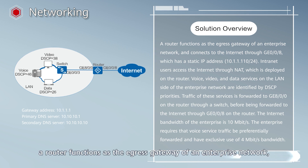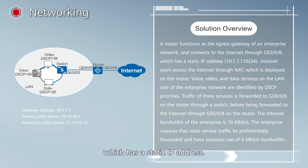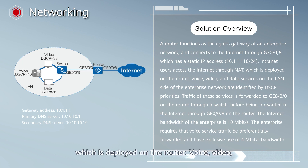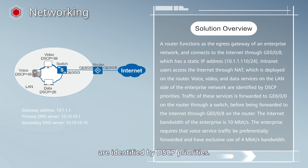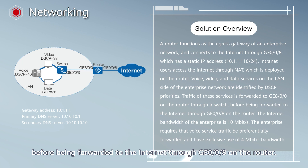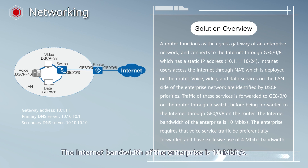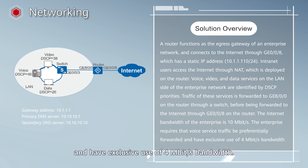In this networking diagram, a router functions as the egress gateway of an enterprise network and connects to the Internet through the interface GE0/0/8, which has a static IP address. Intranet users access the Internet through NAT deployed on the router. Voice, video, and data services on the LAN side are identified by DSCP priorities. Traffic is forwarded to GE0/0/0 on the router through a switch, then forwarded to the Internet through GE0/0/8. The Internet bandwidth of the enterprise is 10 Mbps.